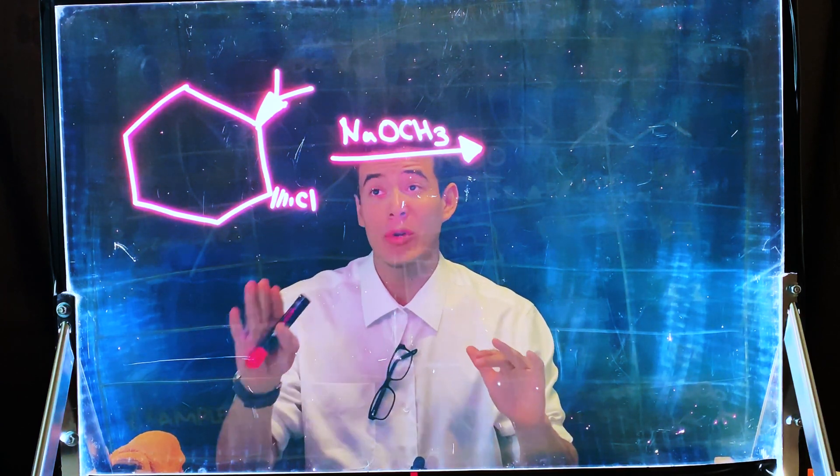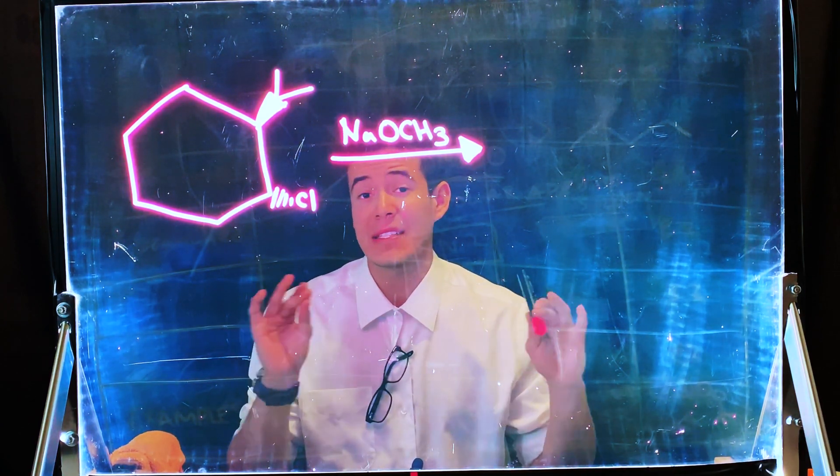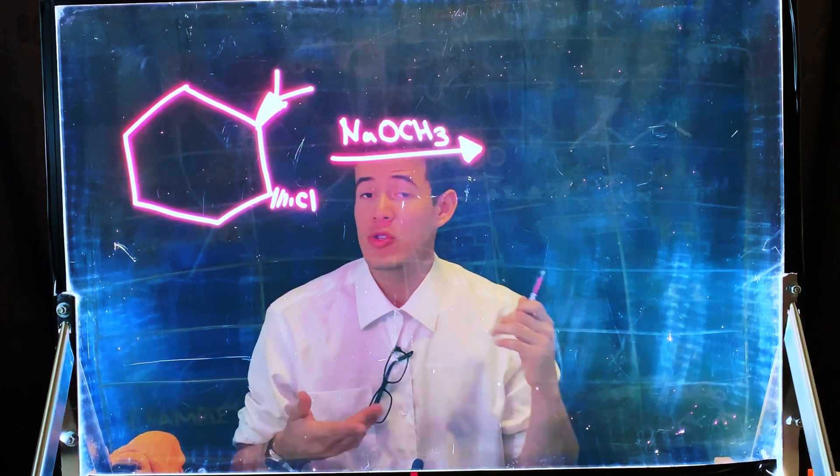I went ahead and put another example on the board and I want you guys to give it a try. Try to use your skills and examine the substrate and the nucleophile. In this case we don't have any solvent and we're trying to predict our major product. When we're examining our substrate, we want to determine if it's primary, secondary, or tertiary. It's going to be secondary because this carbon is attached to two other carbons.